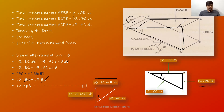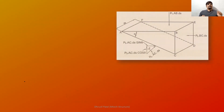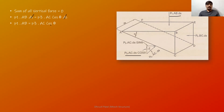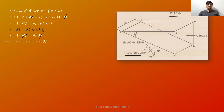Now taking the summation of all vertical forces equal to zero: P1·AB·DS equals P3·AC·cos θ·DS, as these two are opposite to each other. DS cancels, giving P1·AB equals P3·AC·cos θ. Since we proved that AB equals AC·cos θ, substituting gives P1·AB equals P3·AB, and therefore P1 equals P3. This is Equation 2.